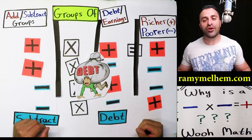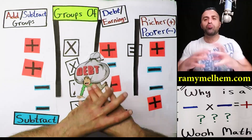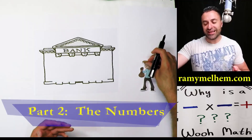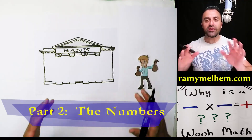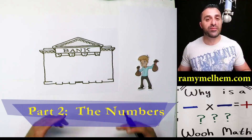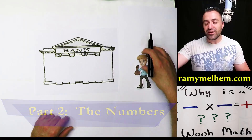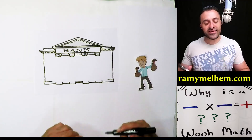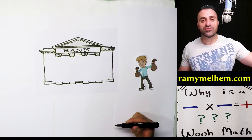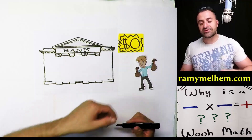Let's go to part two of this video where we look at how this actually works. We're going to bring this guy back for our example and simplify our numbers down — I just want to get the point across with simple numbers. In his bank account at the moment, he's got zero dollars.